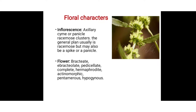The flower: bracts are present, so it is called bracteate. Bracteoles are absent, so it is ebracteolate. The flowers are pedicellate, complete, hermaphrodite (bisexual), actinomorphic (symmetrical), pentamerous — usually five in number for calyx or corolla — and hypogynous, meaning the ovary is superior.